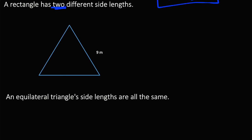Then finally, we have equilateral triangles. What's an equilateral triangle? An equilateral triangle is when all the sides are the same lengths — they all have the same degrees and the same side length. So this would be 9 centimeters, this would be 9 centimeters, and this would also be 9 centimeters, as it says right here.